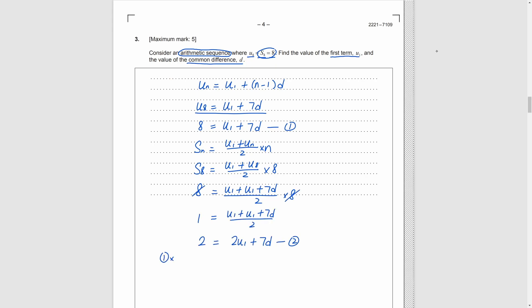Now, we just need to solve simultaneous equations. Use the tricks we learned from middle school. We can get d is 2 and u_1 is negative 6.